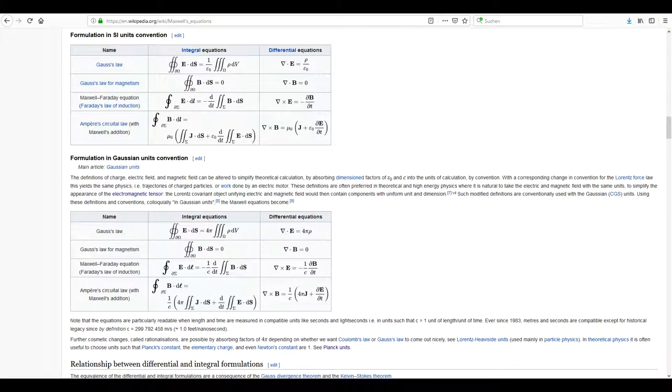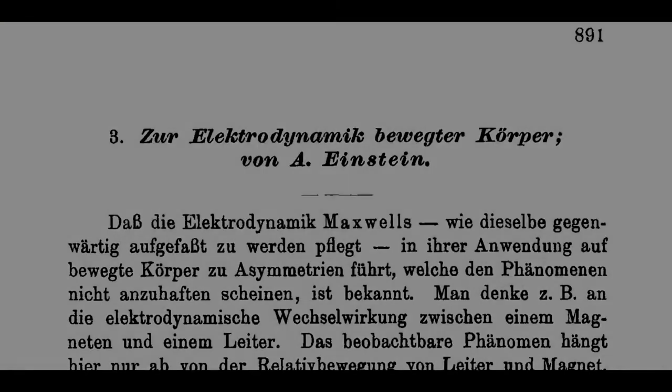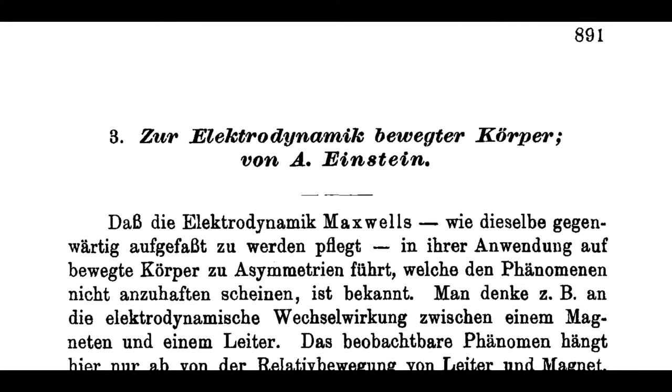When Maxwell's equations were all set in stone and people considered classical electrodynamics to be complete, there were still some contradictions which people could not resolve. As it turned out, these were not just some minor inconveniences, but a completely new theory was developed by Albert Einstein to resolve these issues, the theory of special relativity.